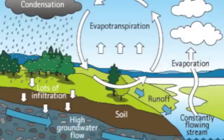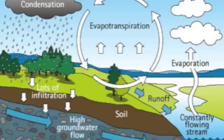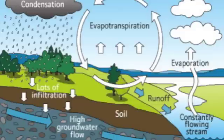Sun comes out, turns that water to water vapor — evaporation is the name of the game. Sun comes out, plants release water as water vapor, and transpiration is that process's name.